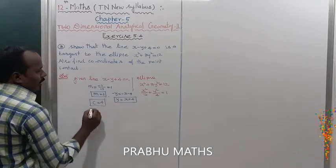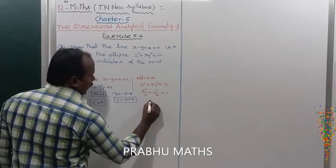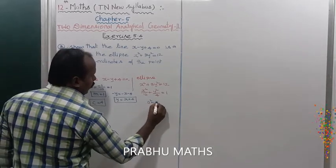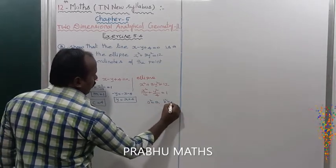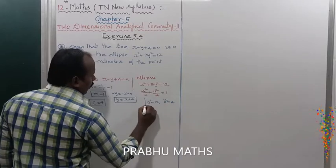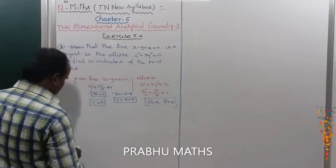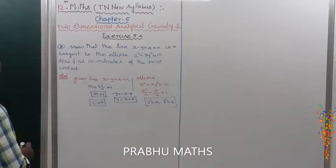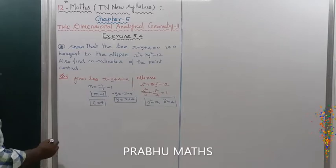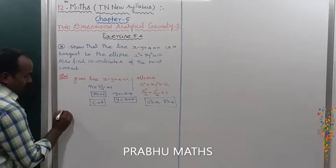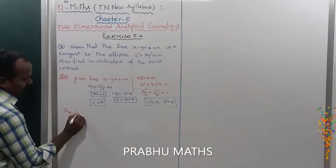Next, A square is equal to 12, and B square is equal to 4. Now we apply the condition for the line to be tangent to the ellipse.